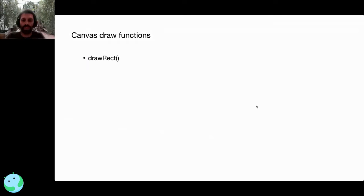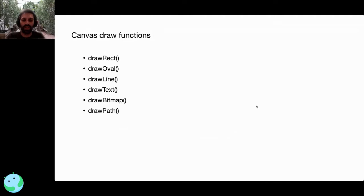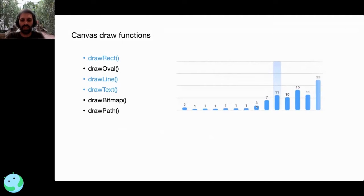The canvas functions available include draw rectangle, draw oval, draw lines, text, bitmaps, and paths. In this example I'll use three of them: rectangle, line, and text. Draw text is tricky because it's experimental in composable canvas, which I'll explain more later.